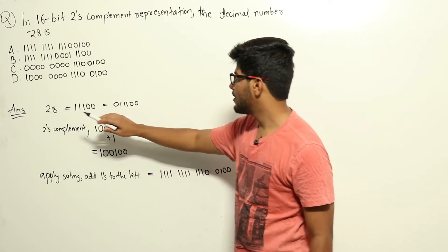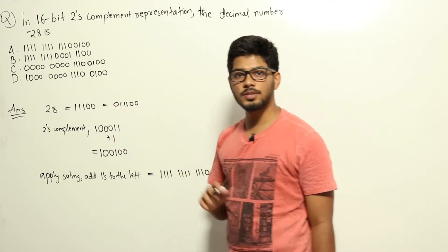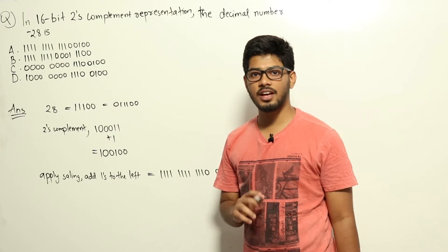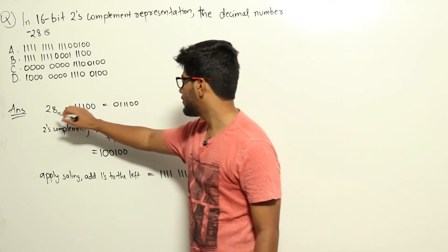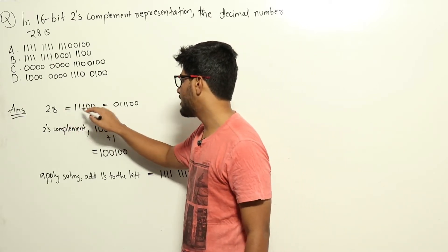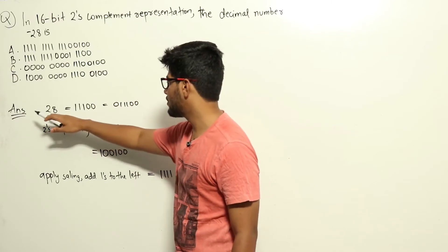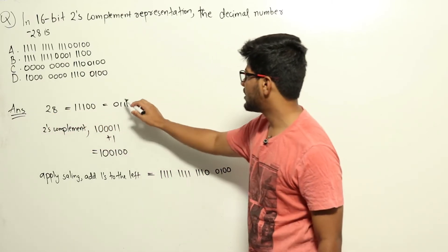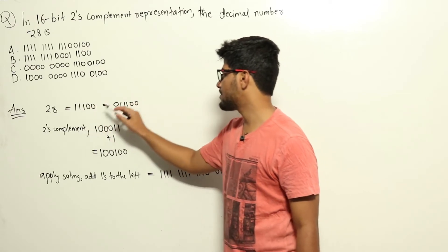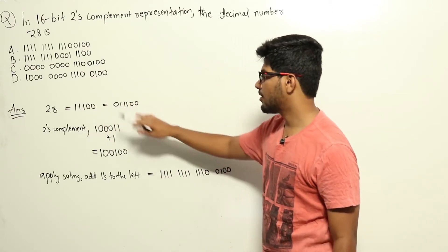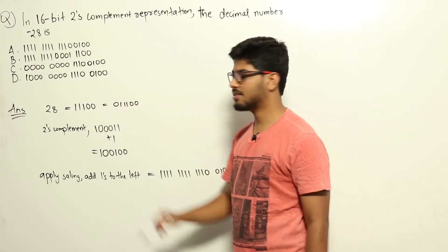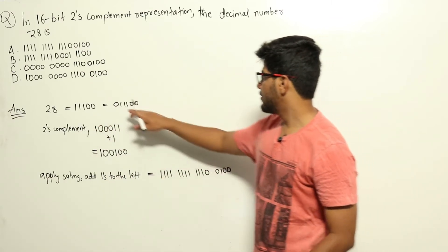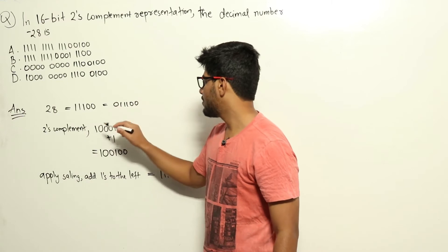In 2's complement form, all positive numbers should have 0 at the beginning and all negative numbers should have 1 at the beginning. Here we have 1 at the beginning, but 28 is a positive number, so in order to represent it in 2's complement I will add one more 0 at the beginning and represent it as 011100. It's the same number — I just added one bit at the start so that the initial bit is 0.